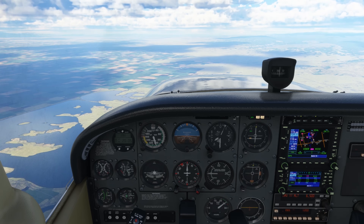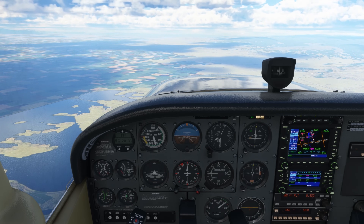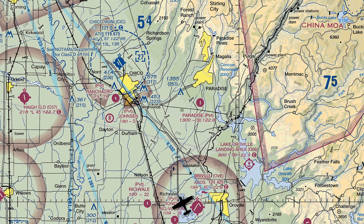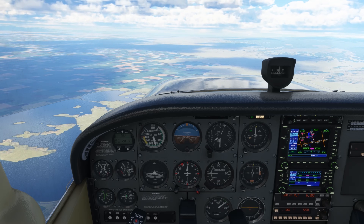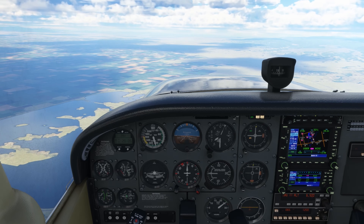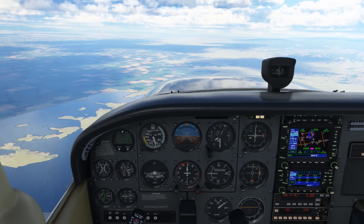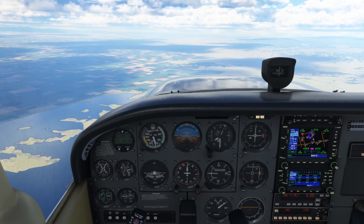We're at 6,500 feet in our Cessna in beautiful VFR conditions, flying inbound at Chico Municipal Airport in California, a tower-controlled Class Delta airport. Since Chico is in Class D airspace, we'll need to establish two-way radio communication with the tower prior to entering. Before we do that, we want to get all our ducks in a row and do a comprehensive arrival brief.